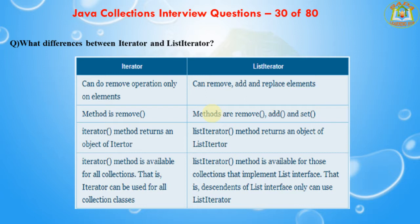The iterator() method returns an object of Iterator; listIterator() returns an object of ListIterator. The iterator() method is available for all collections, meaning Iterator can be used for all collection classes. The listIterator() method is available only for collections that implement the List interface — that is, only instances of List interface can use ListIterator.